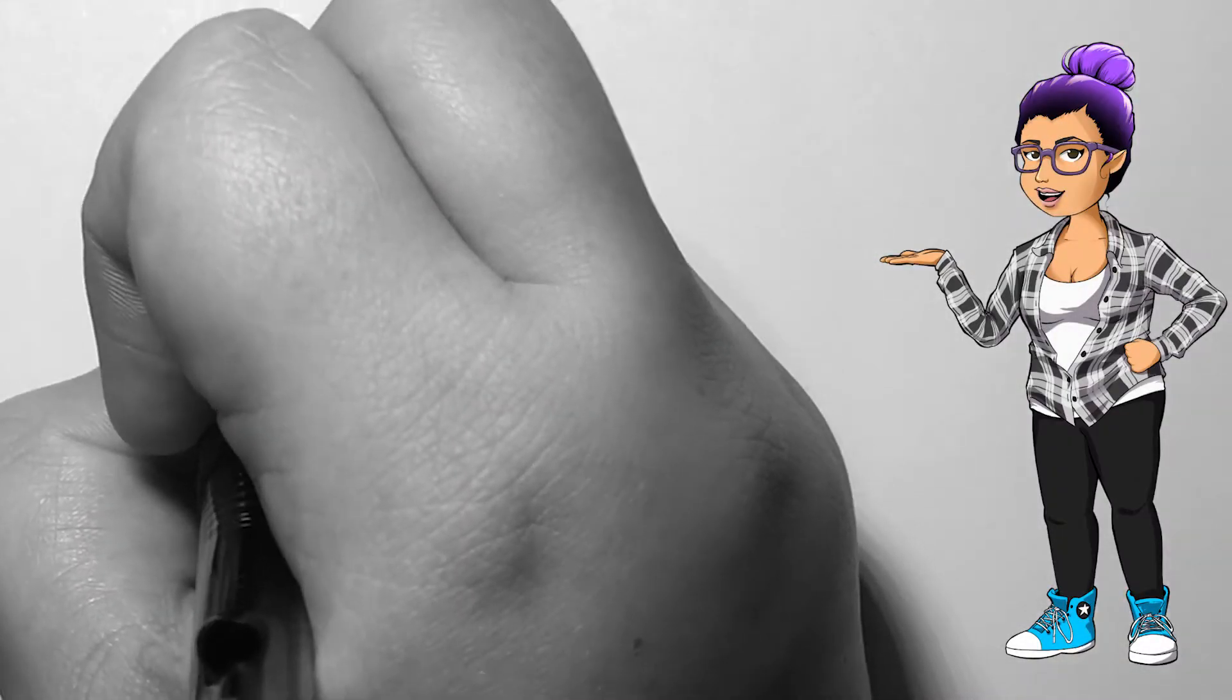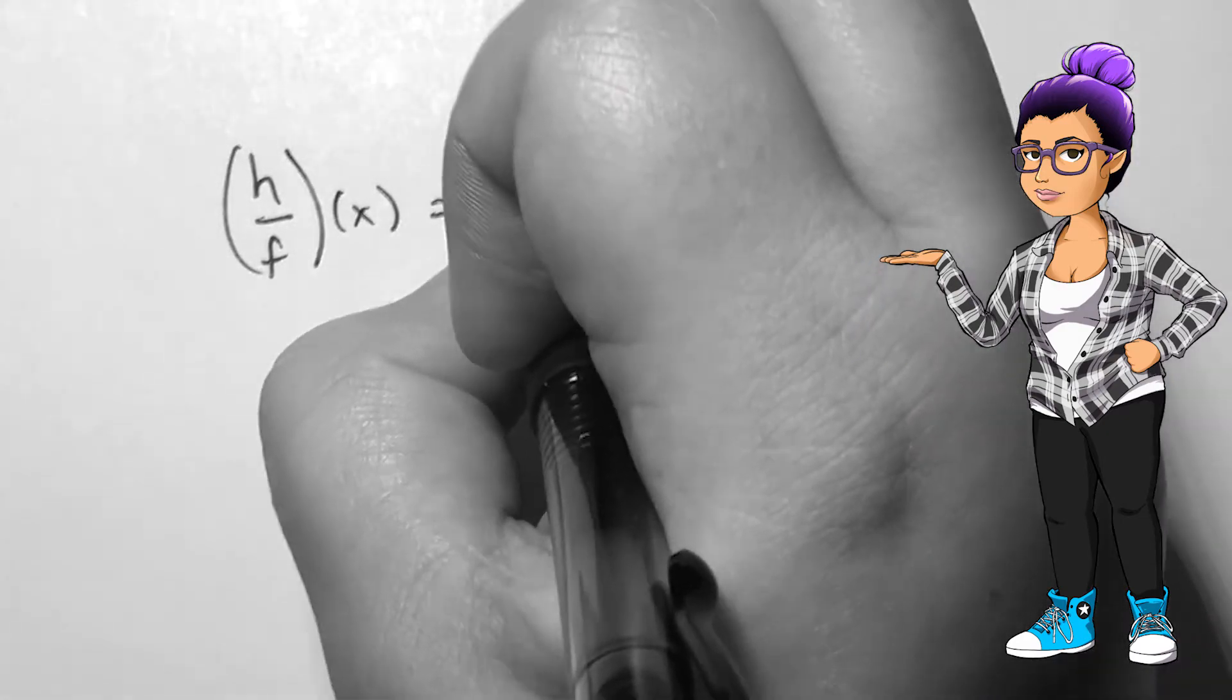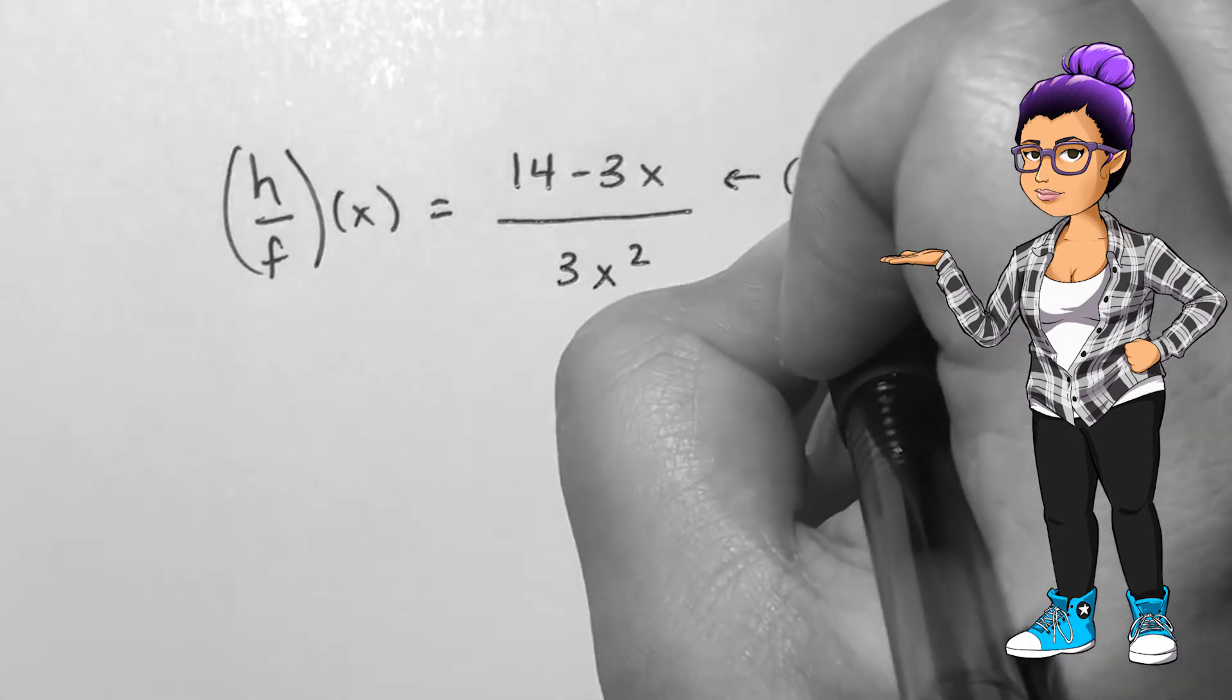To find the domain of the function created by a division, the domain will be the domain of the numerator function, excluding any x-intercepts or missing values from the denominator function.